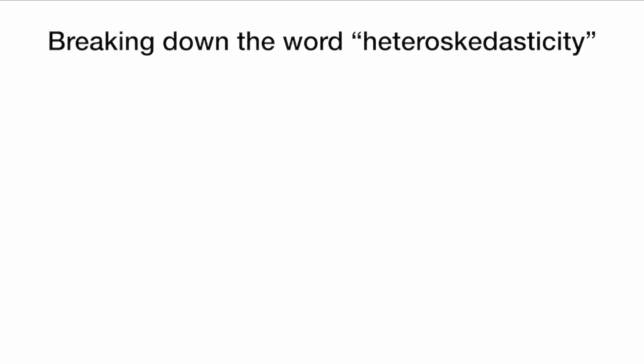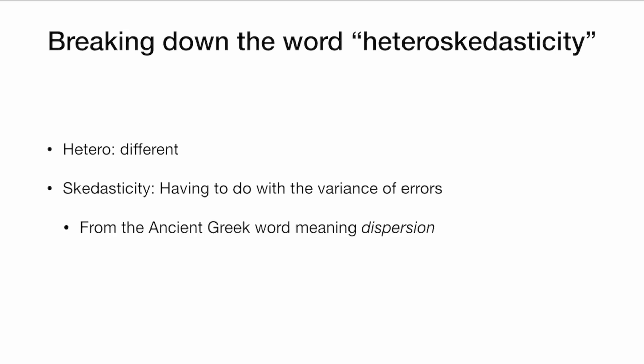So let's break down the words heteroscedasticity and homoscedasticity. Hetero means different. Scedasticity is a word meaning having to do with the variance of errors in a statistical model, and it comes from the ancient Greek word meaning dispersion, variation, variance.